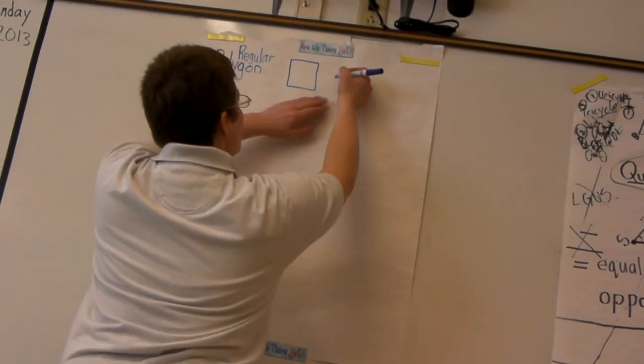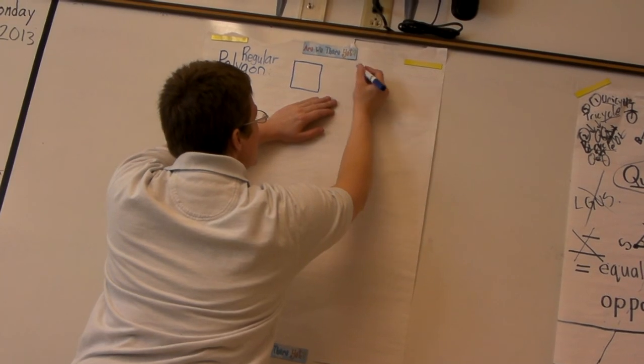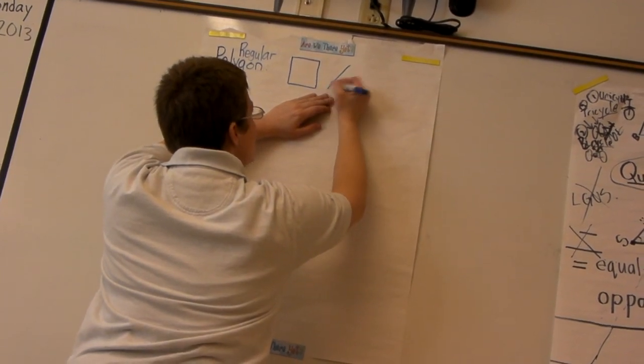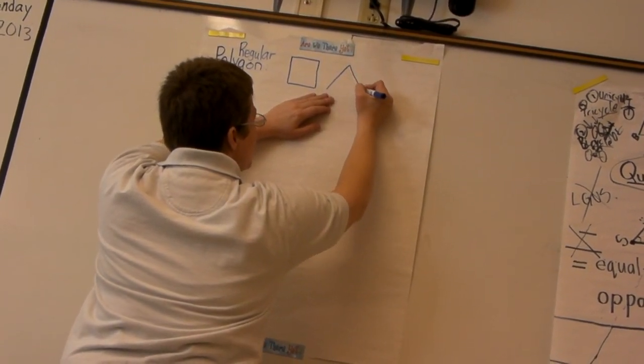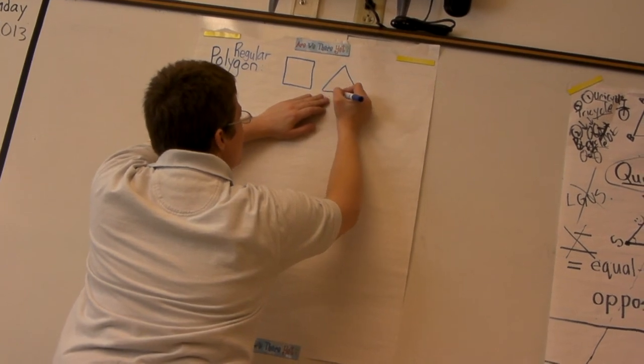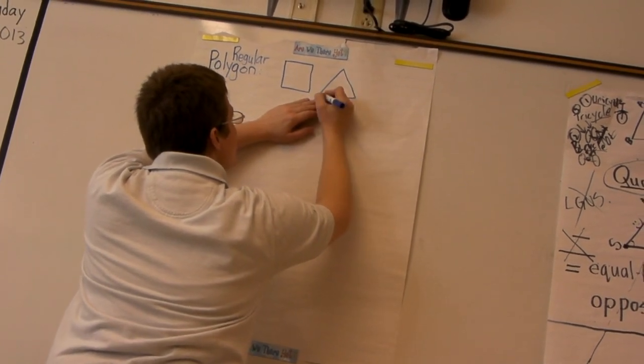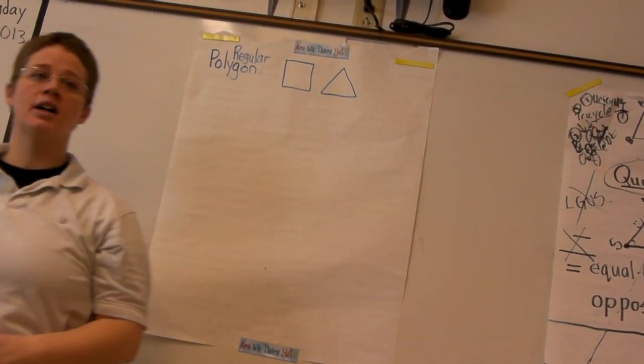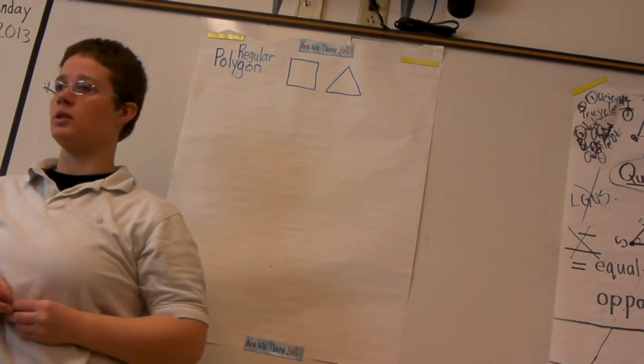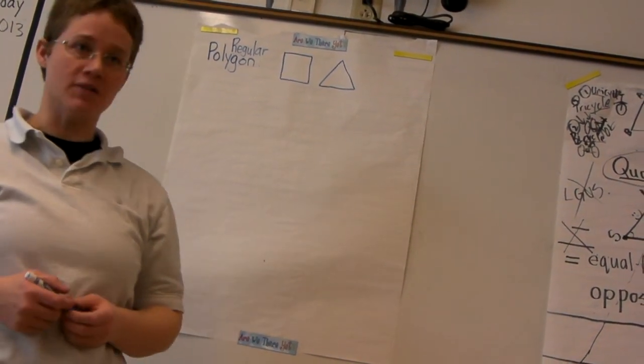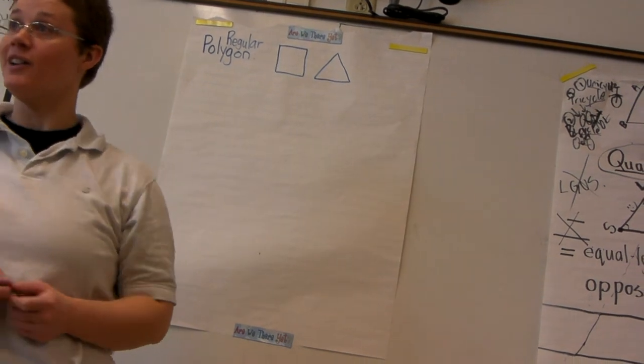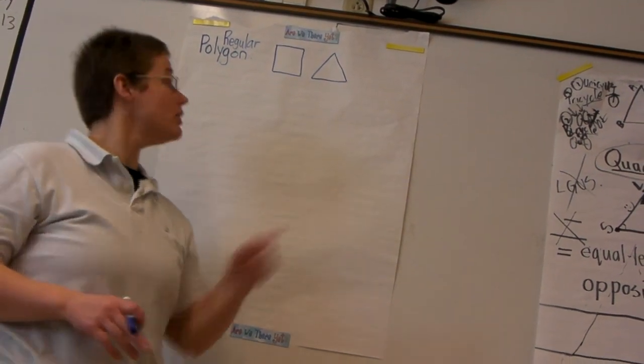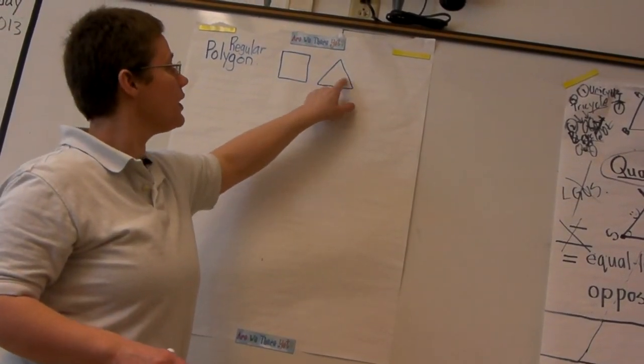How about an equilateral triangle? Is this a regular polygon? Remember, in a regular polygon, all the sides and all the angles have to be equal. Yes, if this is an equilateral triangle, that means everything's equal. All the sides are equal and all these angles are equal.